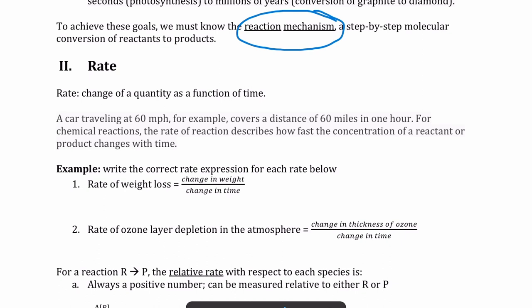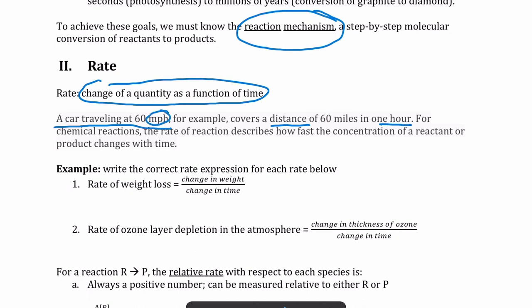We need to understand the meaning of the word rate and specifically how it applies to chemical reactions. Rate is defined as the change of a quantity as a function of time. For example, the speed of a car is a rate — it's measured by the amount of distance the car covers in some unit of time, typically miles per hour, meaning the car covers 60 miles in one hour, so distance per unit of time. With respect to chemical reactions, the rate measures the change in concentration — concentration of reactant or product over some unit of time.